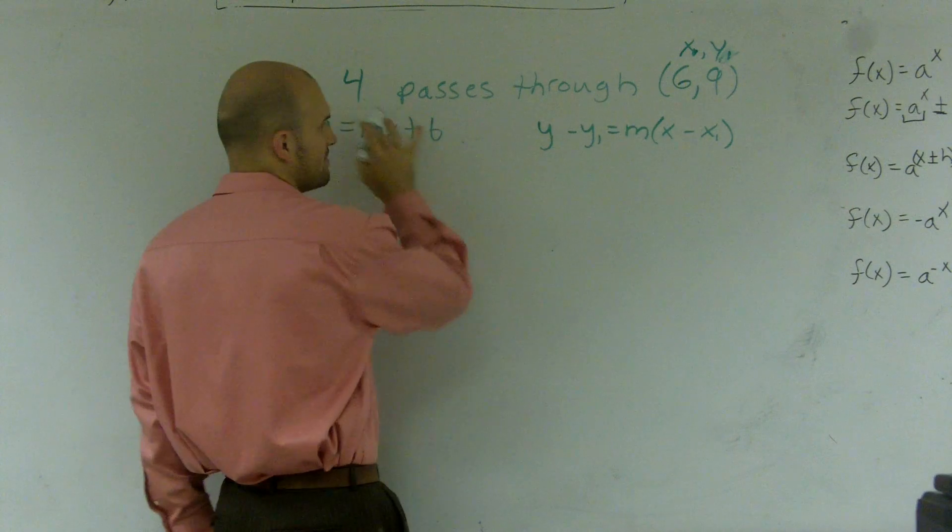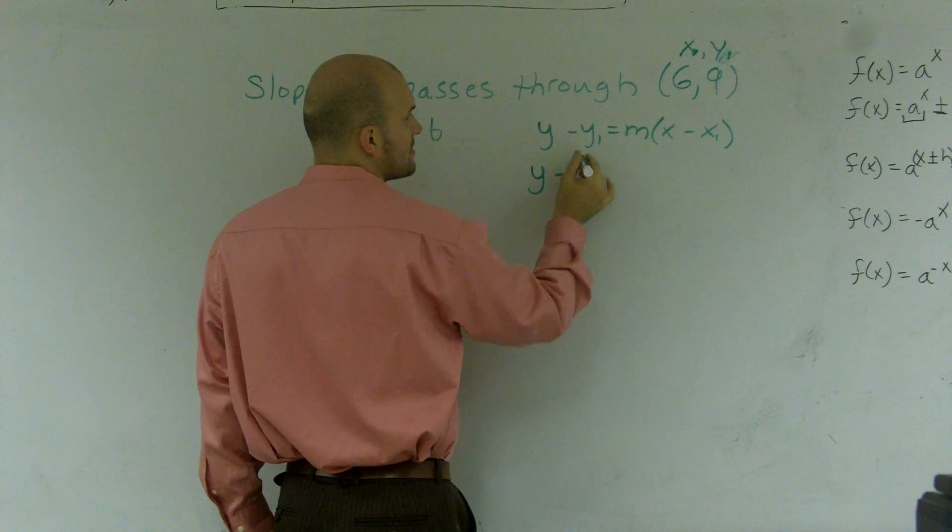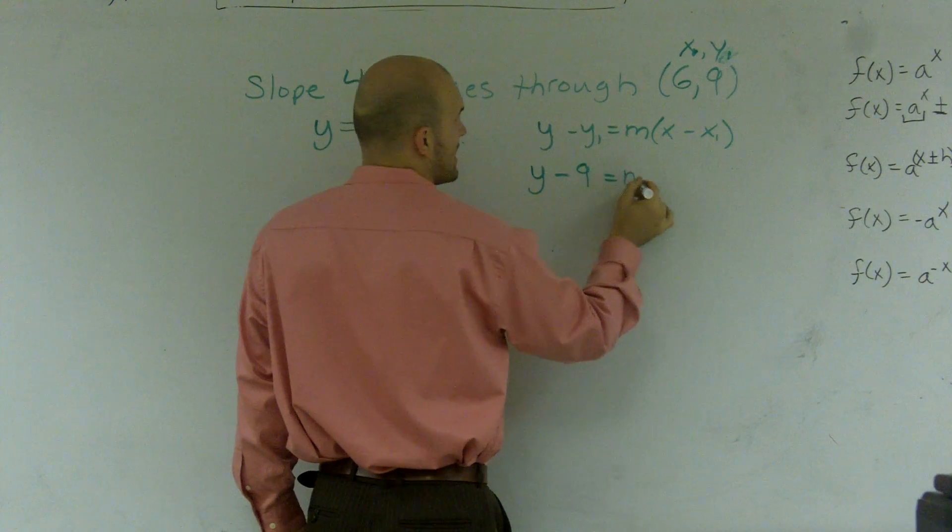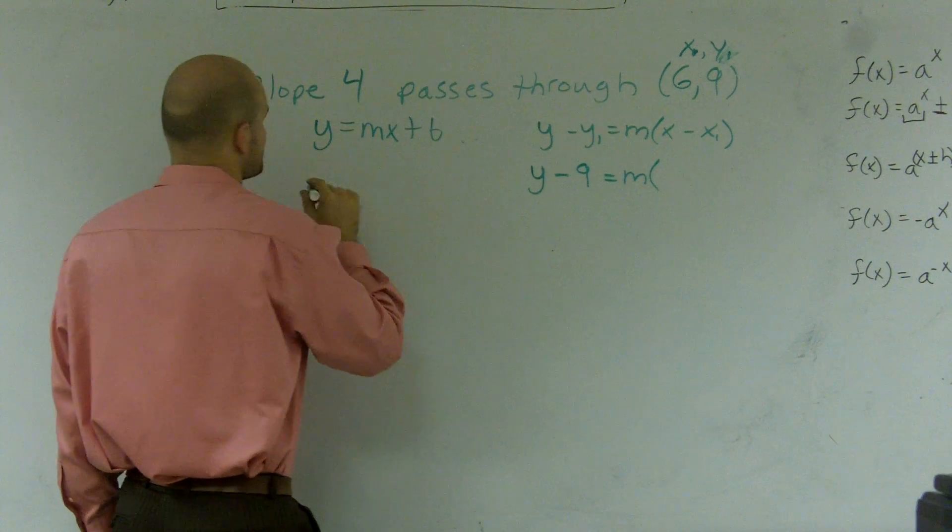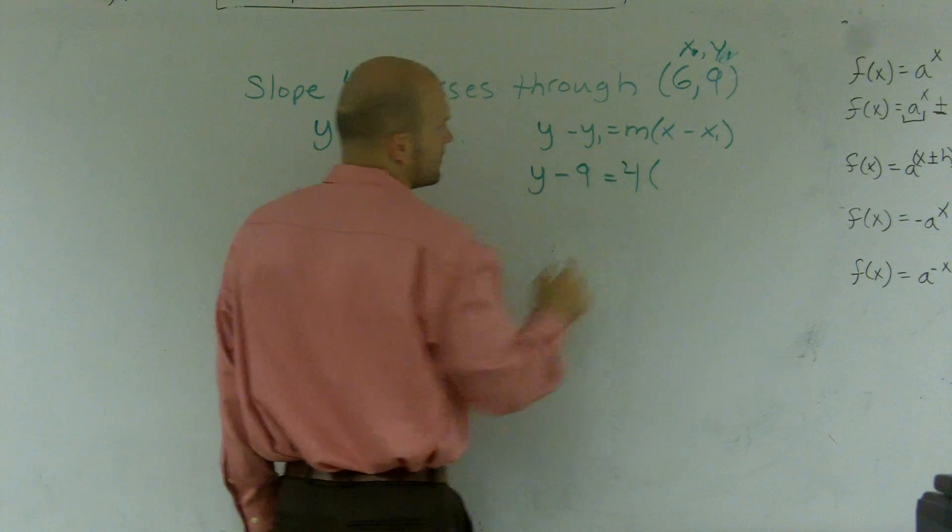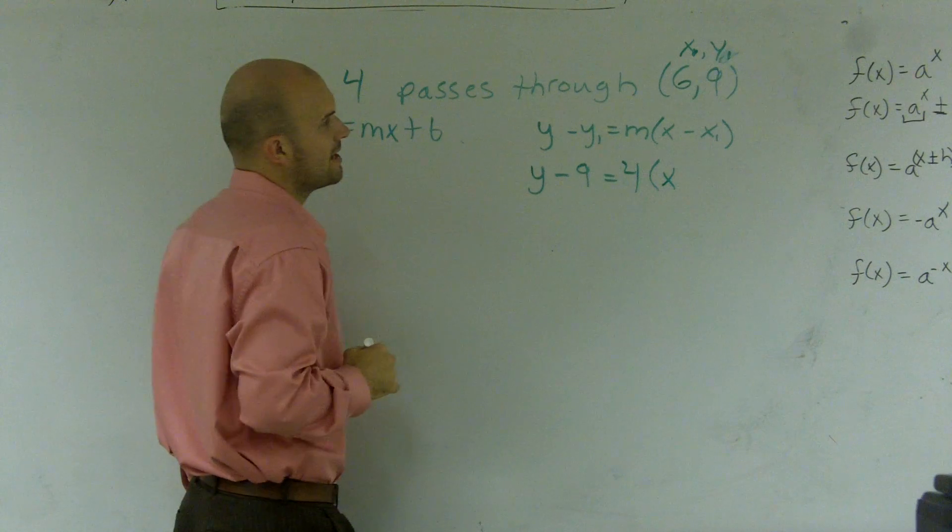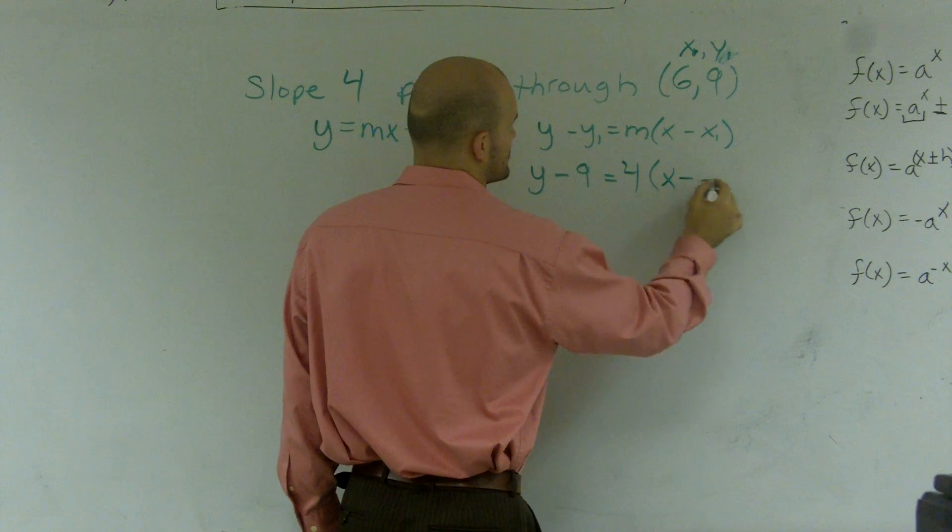And then what I'm going to do is I'm going to plug in my m and my two points, so therefore I have y minus 9 equals m times, I'm sorry, m is 4, slope is 4 times x and then minus my x, which is 6.